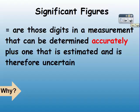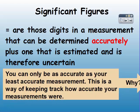A significant figure is the digits of a measurement that can be determined accurately, plus one that is estimated and is therefore uncertain. It's important to keep up with significant figures because you can only be as accurate as your least accurate measurement. This is a way of keeping track of how accurate your measurements were throughout a lab.